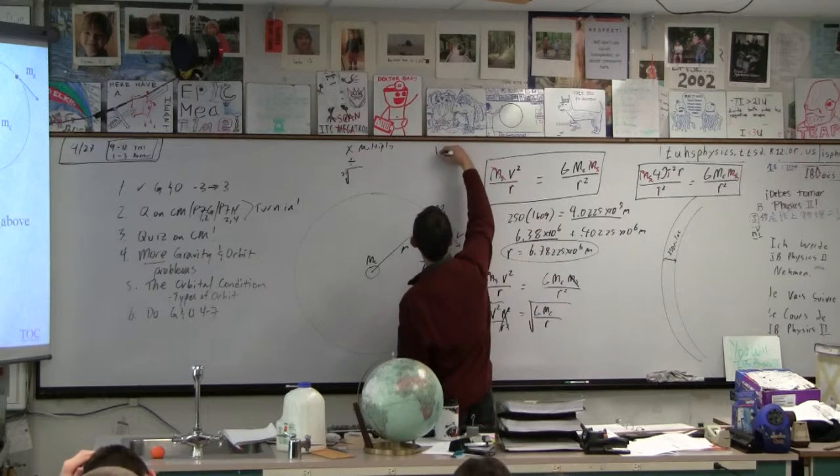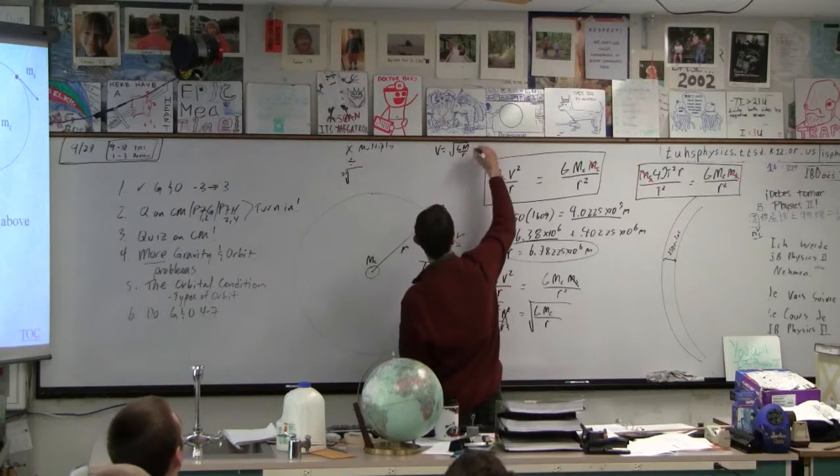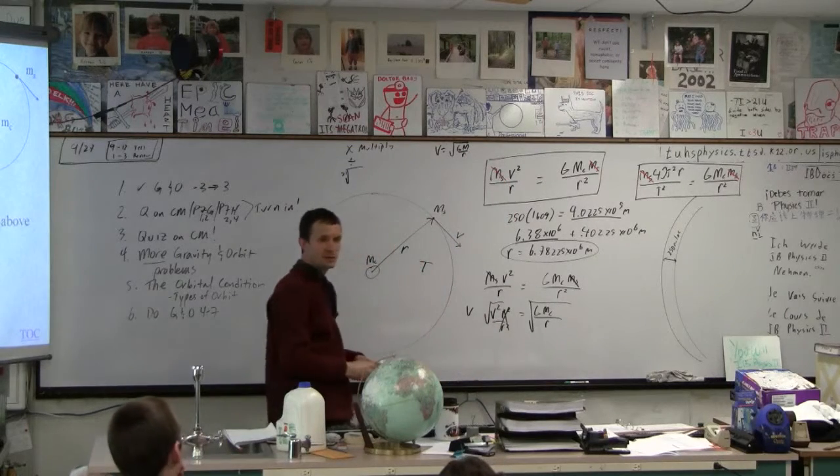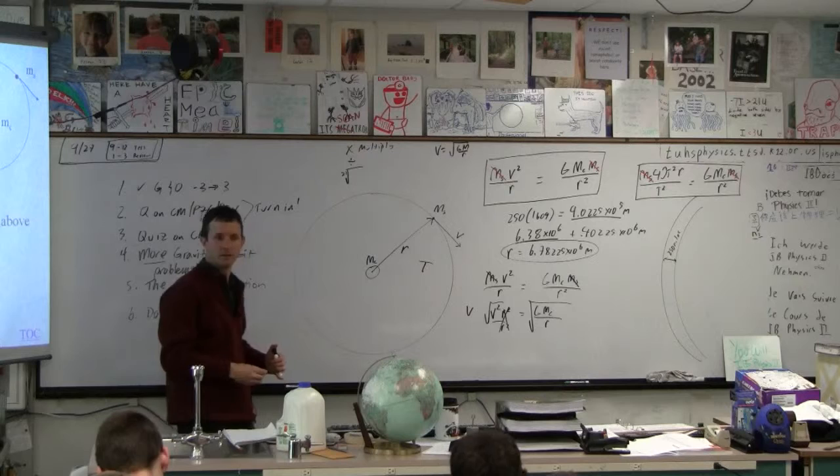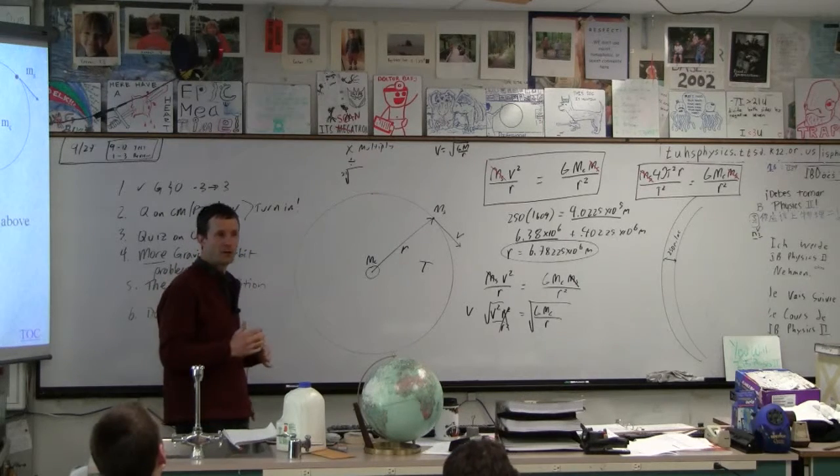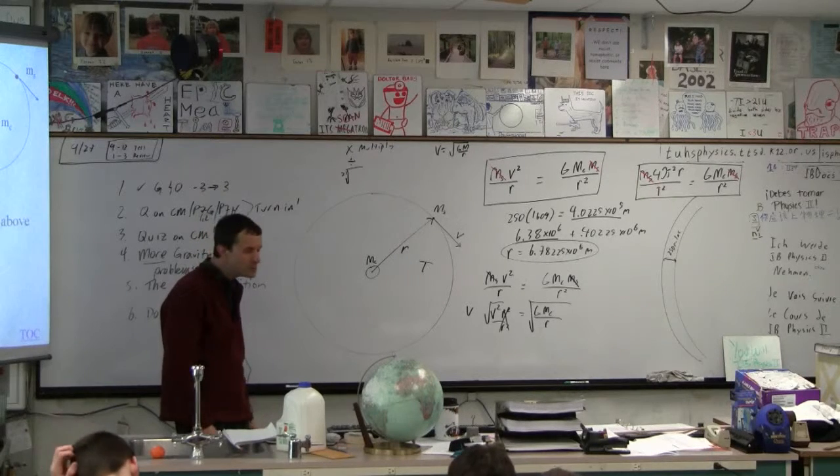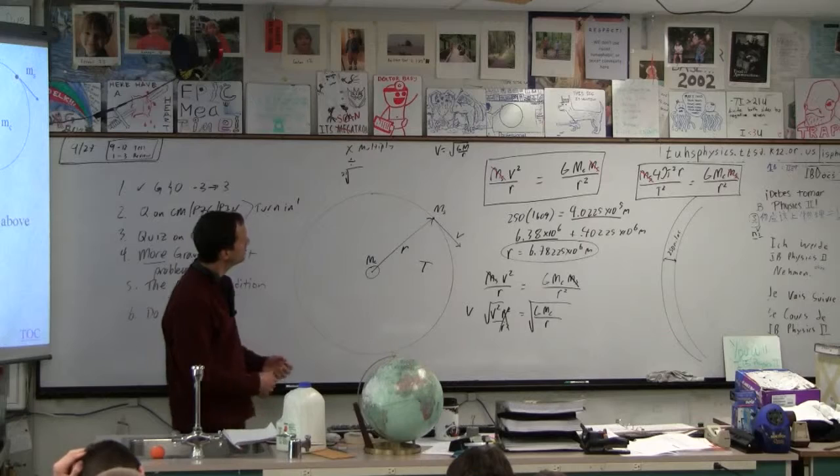Okay, associated with this, V is the square root of GM over R. Which mass is it? Is it the satellite's mass or is it the central body's mass? Central body's mass because the satellite mass always cancels. You won't believe how many people want to use the satellite's mass on a test. Sad, really.